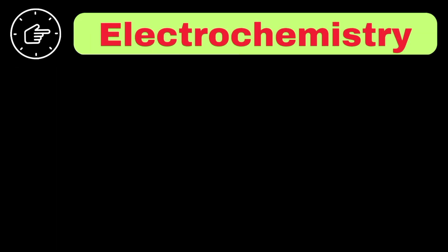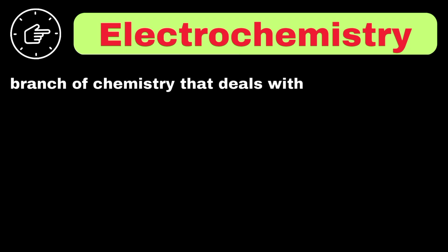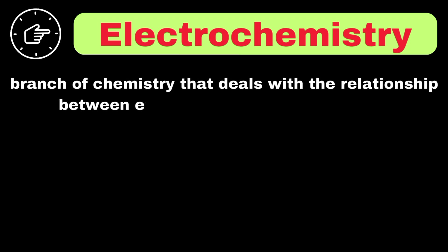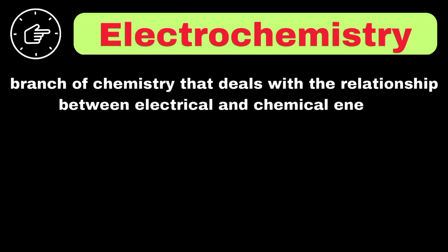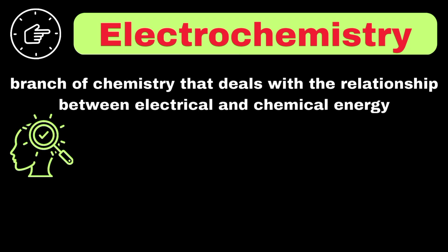Now we can move towards electrochemistry. Electrochemistry is the branch of chemistry that deals with the relationship between electrical and chemical energy. To understand electrochemistry in detail, first we need to know what happens when electrical energy causes chemical reactions, or when chemical reactions produce electrical energy.